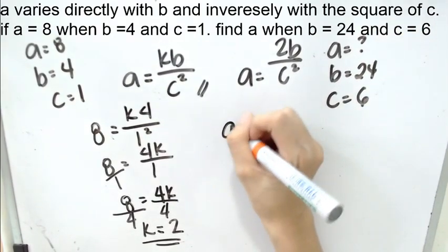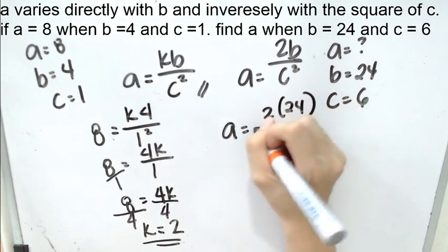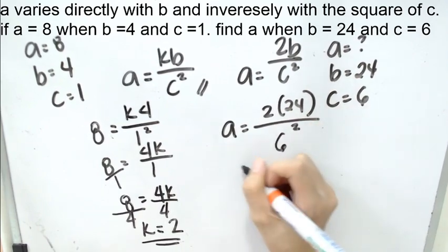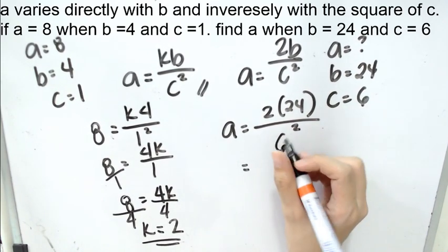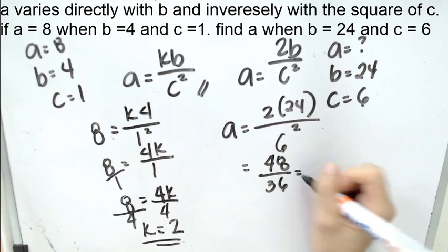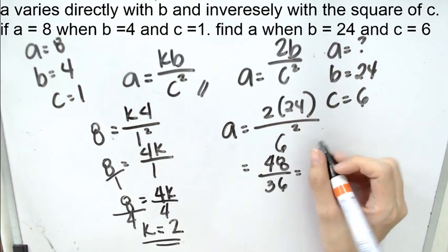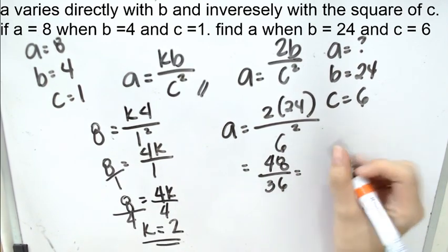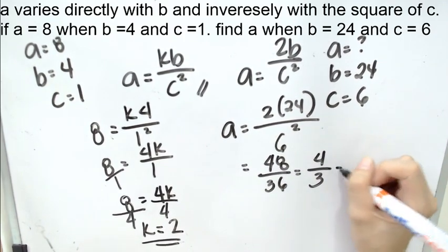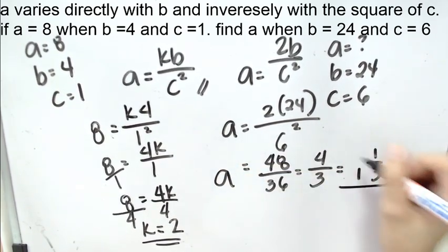So, a is missing, b is 24, 2 times 24. c is 6, c is square here, 6 square. We have here 2 times 24, we have 48 over 36. We reduce this one into lowest term. Divide both sides by 12. They are both divisible by 12. That's why we have here 4 over 3. Simplify 4 over 3. We have here 1 and 1 third. So, the value of a is 1 and 1 third.